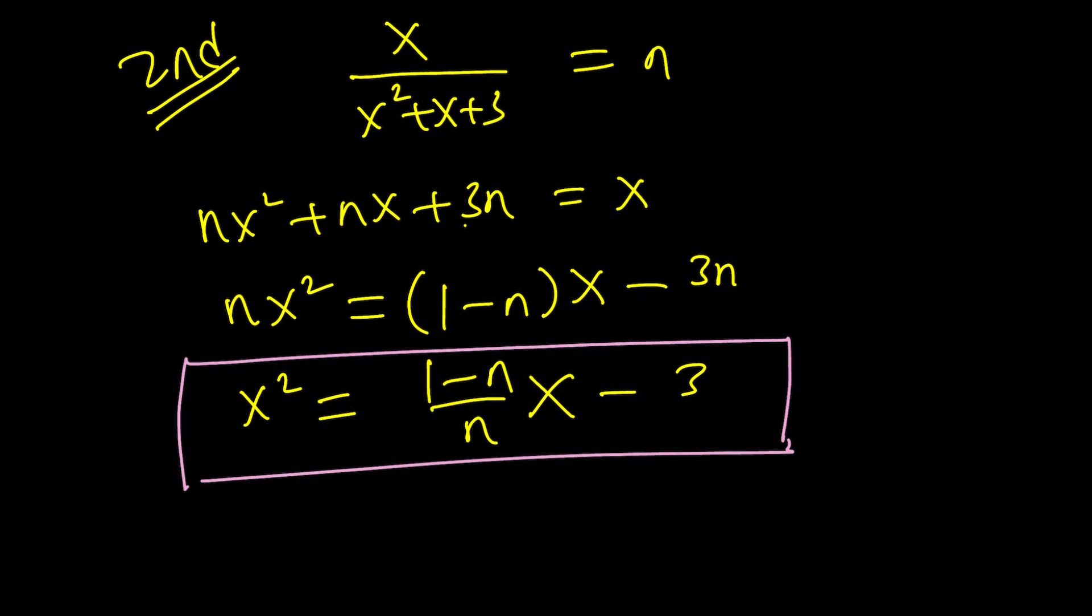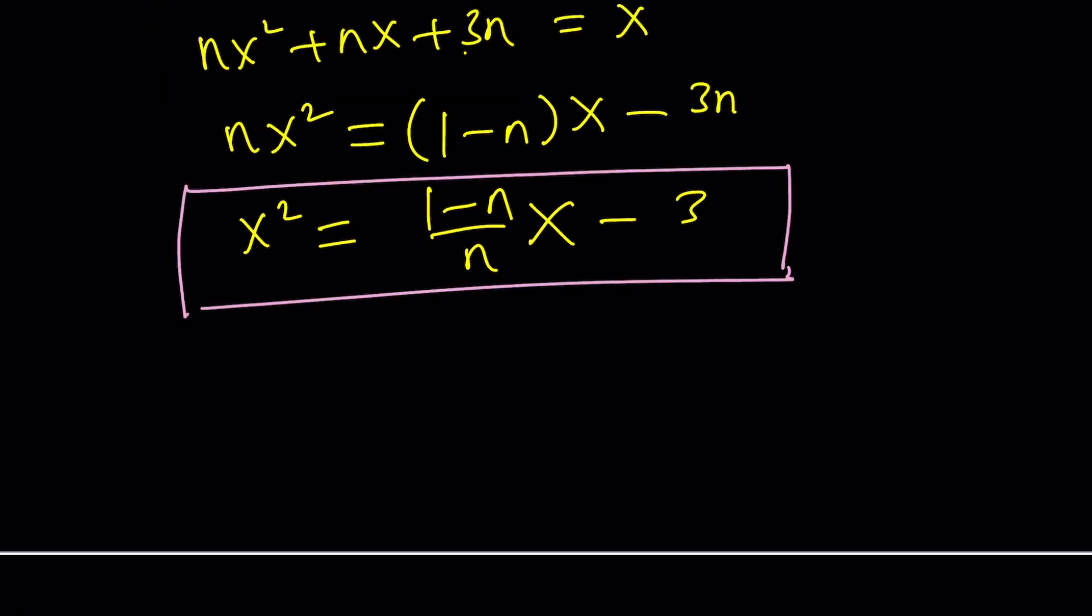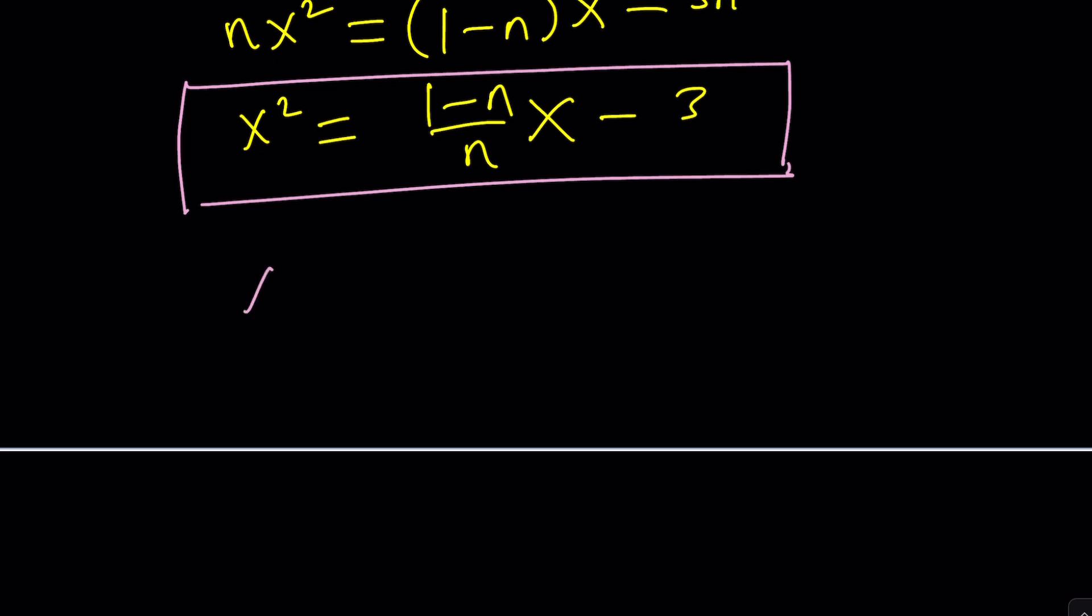In other words, we were able to write x squared as a linear function of x. And guess what? We can do the same thing with x to the fourth. We just need to square both sides. And when we do, we get this, and then that.